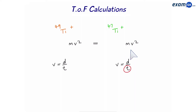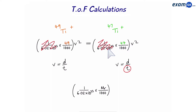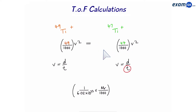We cancel the half on both sides. Now we have M times V squared on each side. Note that M stands for the mass of Ti-49 and the mass of Ti-47 — they're not the same value, so we can't cancel them. To work out M, we use our earlier equation: 1 over Avogadro's constant times Mr over 1000. On the left, we put Mr = 49; on the right, Mr = 47. We can then cancel the Avogadro's constant and the thousands on both sides, giving us: 49V² = 47V².